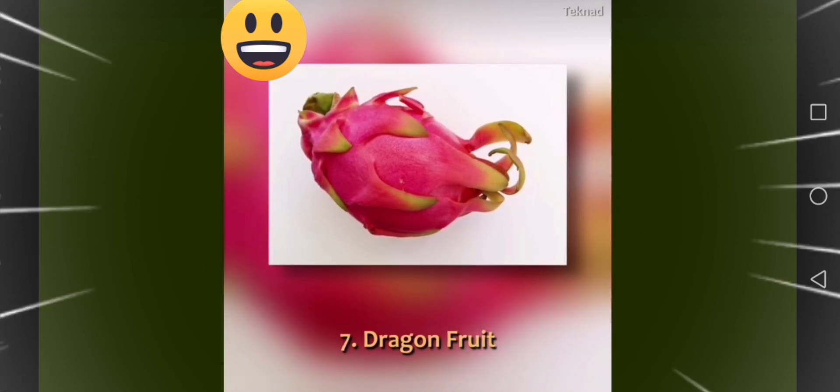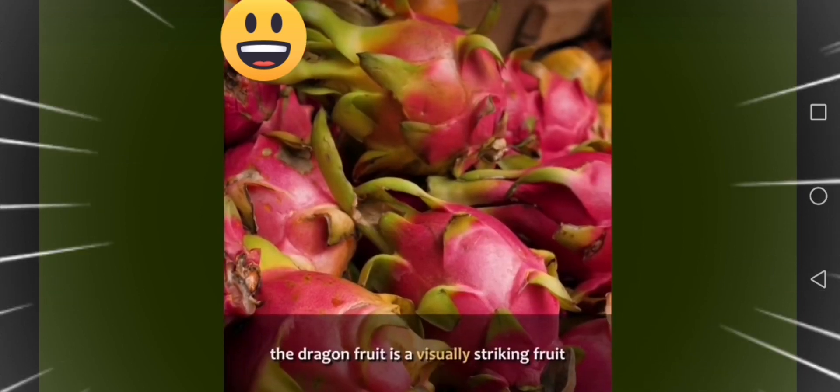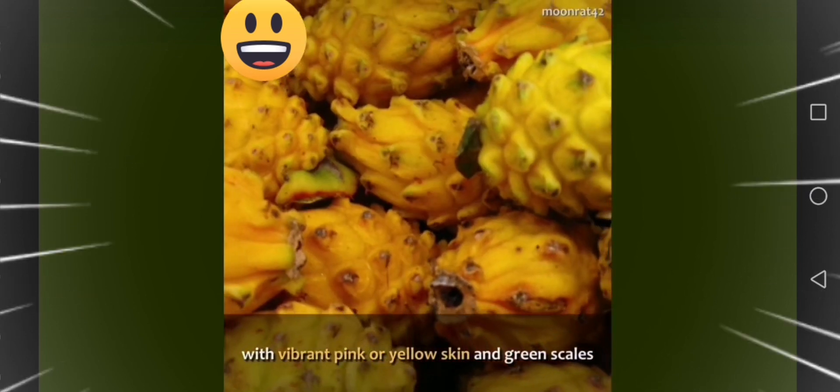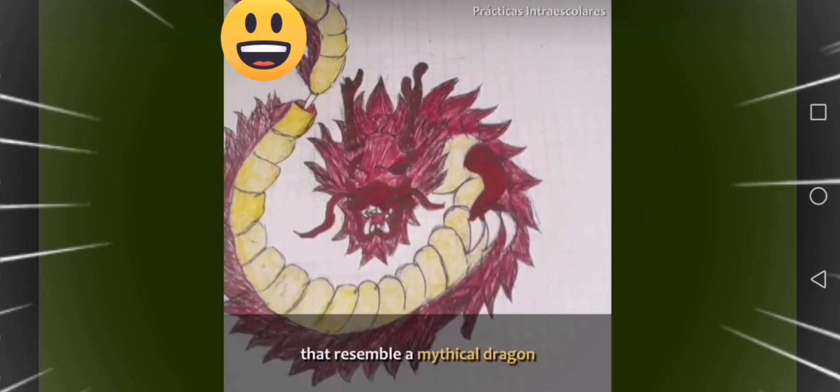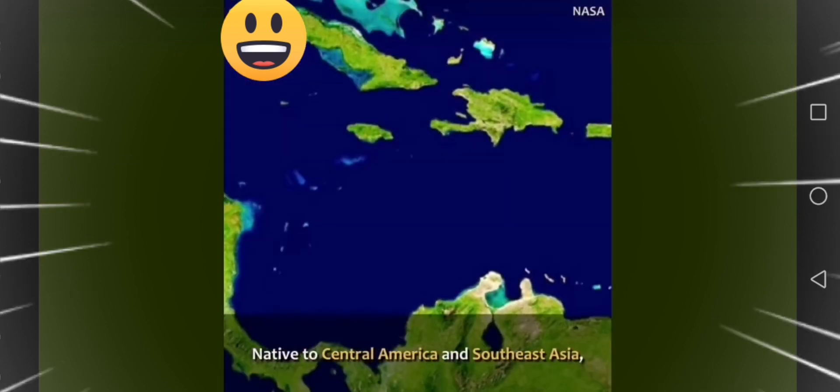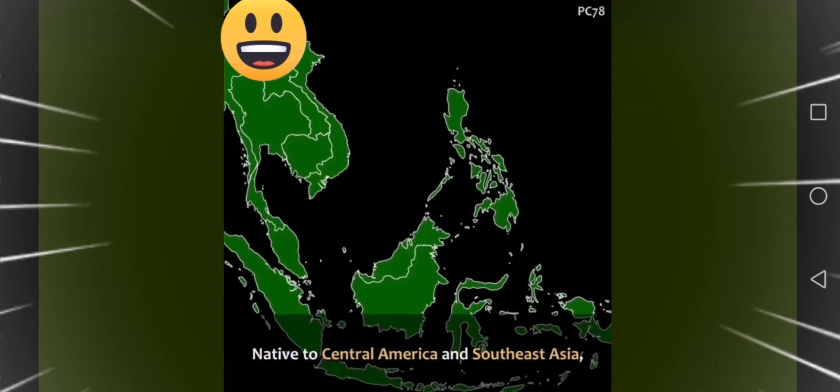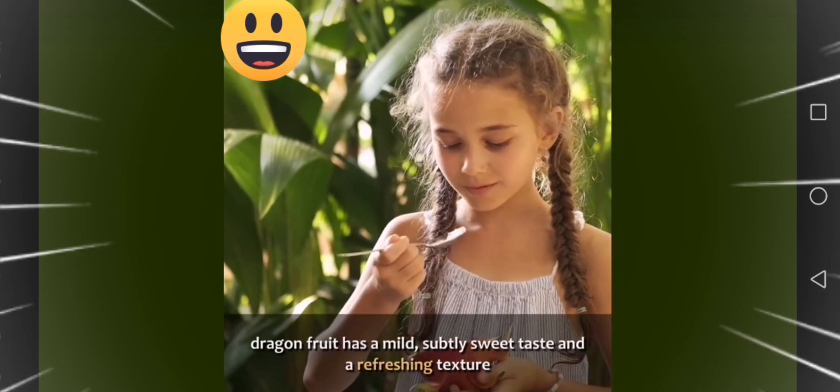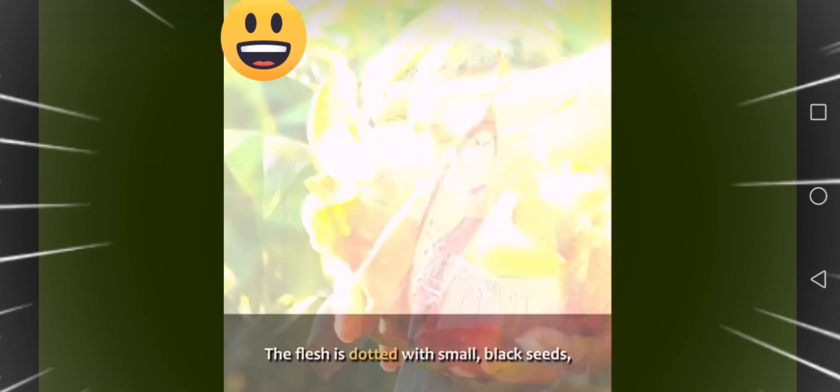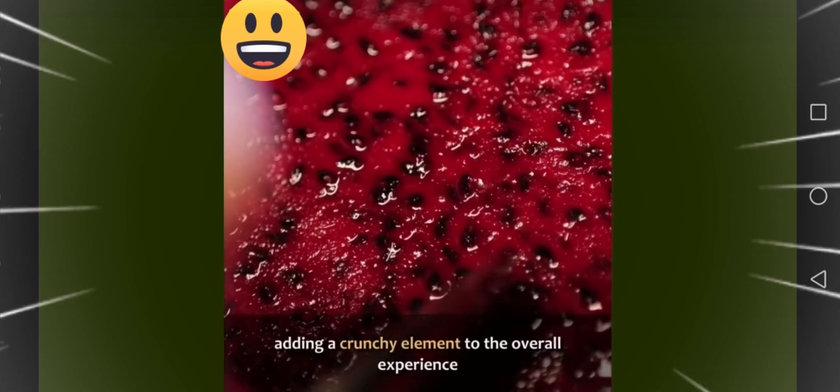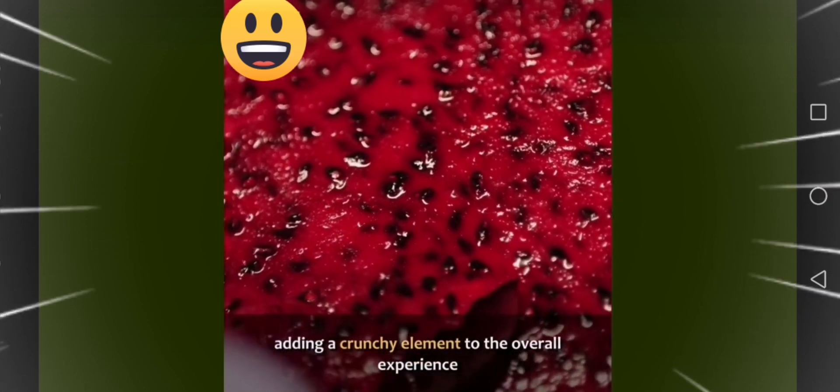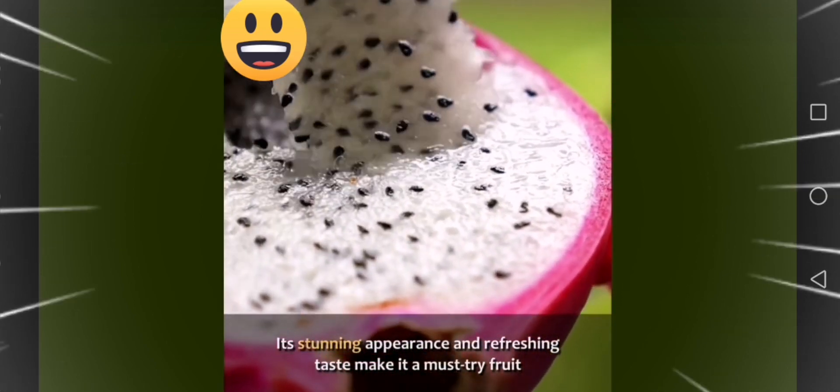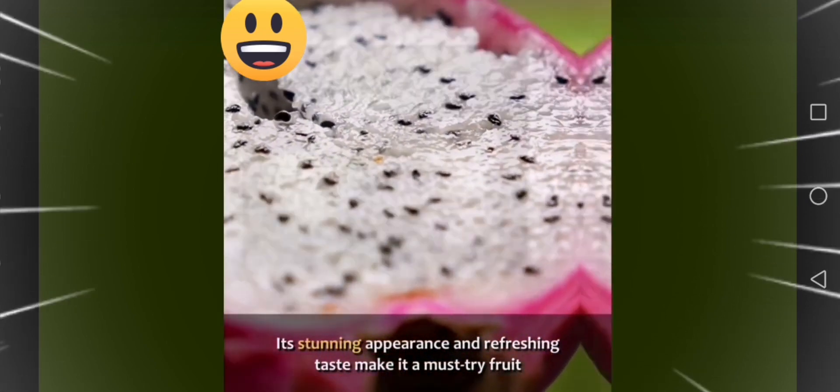Seven, dragon fruit. Also known as pitaya, the dragon fruit is a visually striking fruit with vibrant pink or yellow skin and green scales that resemble a mythical dragon. Native to Central America and Southeast Asia, dragon fruit has a mild, subtly sweet taste and a refreshing texture. The flesh is dotted with small, black seeds, adding a crunchy element to the overall experience. Its stunning appearance and refreshing taste make it a must-try fruit.